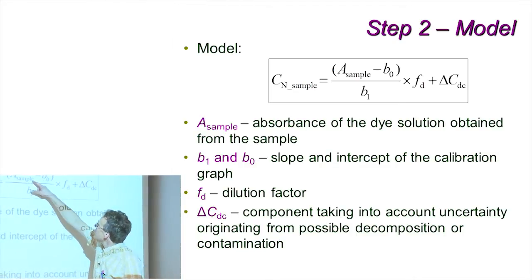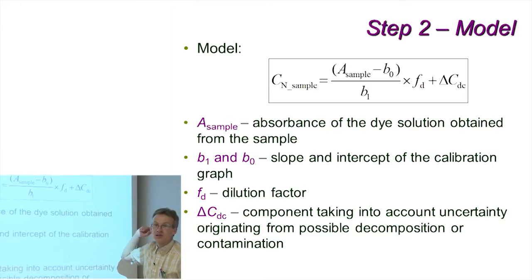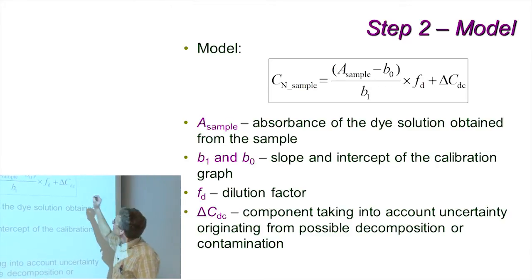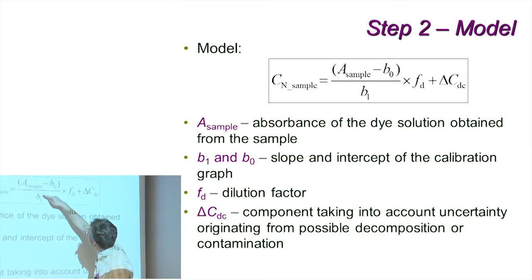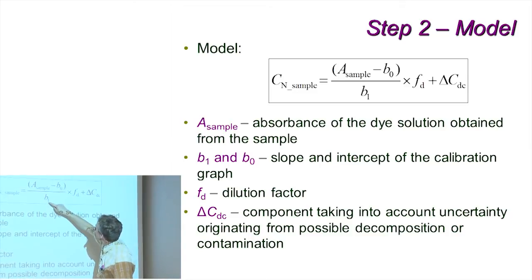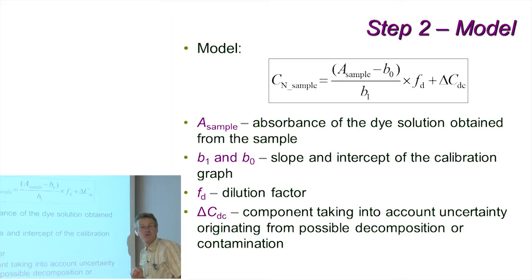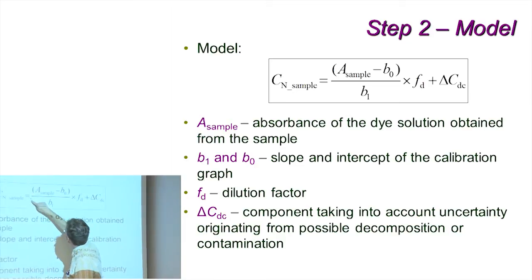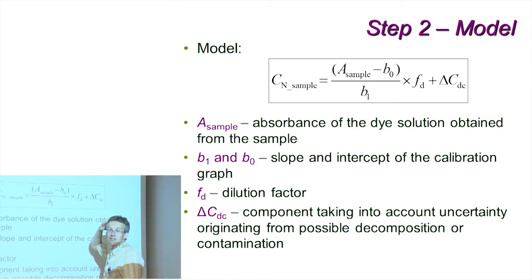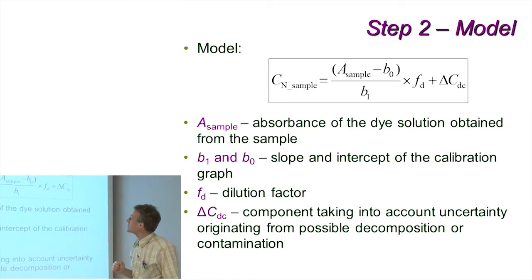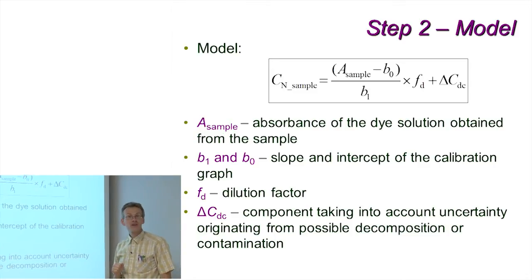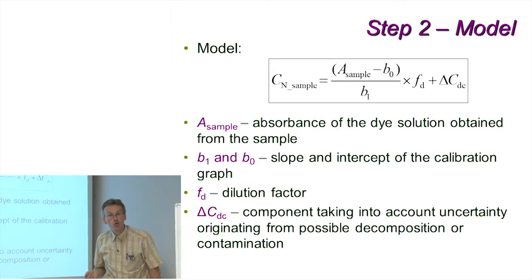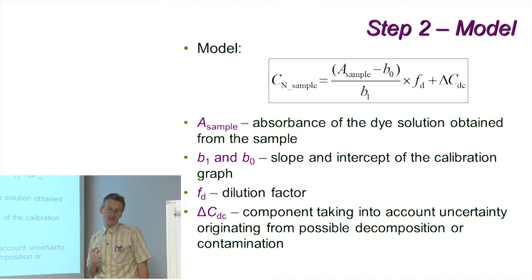A_sample here is the absorbance of the sample solution, and b0 and b1 are the intercept and slope of the calibration graph, respectively. Actually, if we take just this part of the model equation, this part will exactly give us the content of ammonium nitrogen in the solution that was made from the sample.